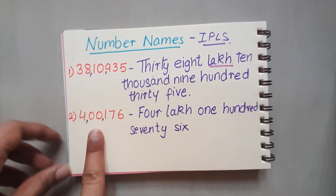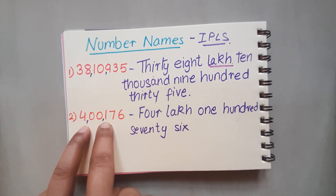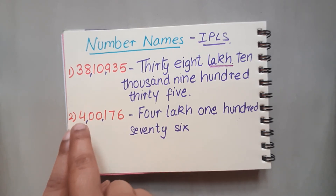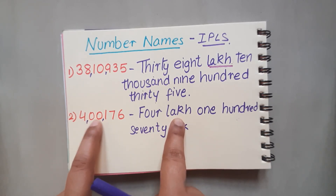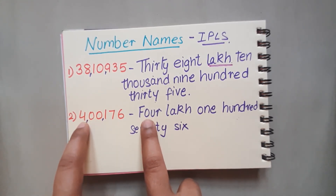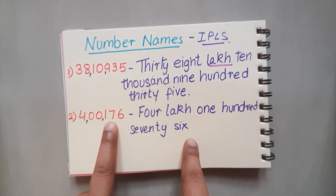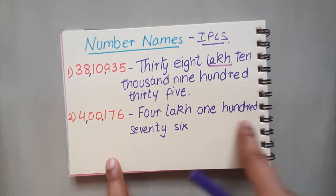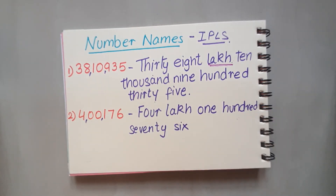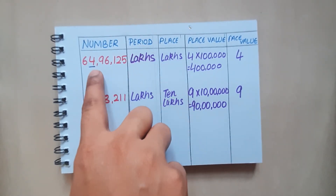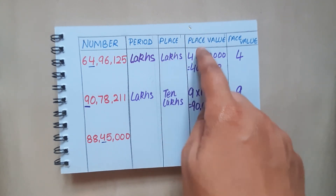For the second number, we first mark the periods — ones period, thousands, and lakhs period. For lakhs period we have only the lakhs place here, so this is going to be four lakh. Here we have zero in the thousands period, so we are not going to write anything for it — zero means nothing, so we go straight to writing four lakh 176. There are no commas, no 's' in the places, and the first letter is capital with the rest in lowercase. I hope this video has been very fruitful in understanding how to write number names and how to find the period, place, place value, and face value of a given digit.